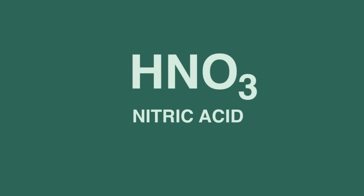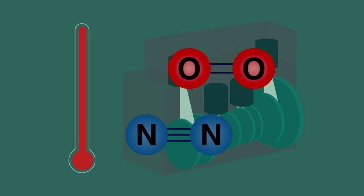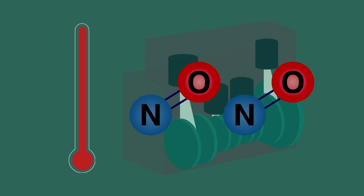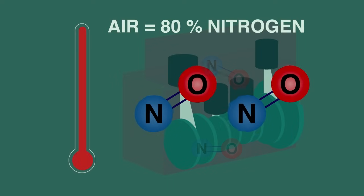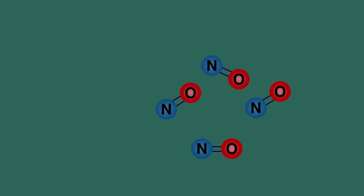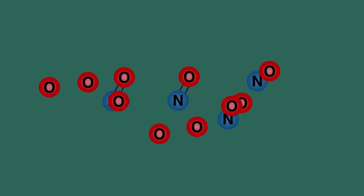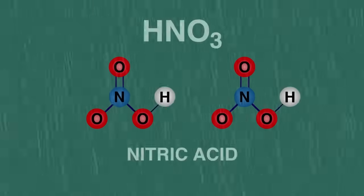Let's now consider how nitric acid gets into the rain. In the high temperature conditions in the cylinders of our motor vehicles, a small amount of nitrogen and oxygen from the air can react. Remember that air taken in to combust the fuel is nearly 80% nitrogen, so exhaust gases from vehicles contain small but significant amounts of nitrogen oxides. Once the oxides of nitrogen are in the air, they react with more oxygen, just like we saw with sulfur dioxide, and dissolve in the rainwater to form nitric acid.